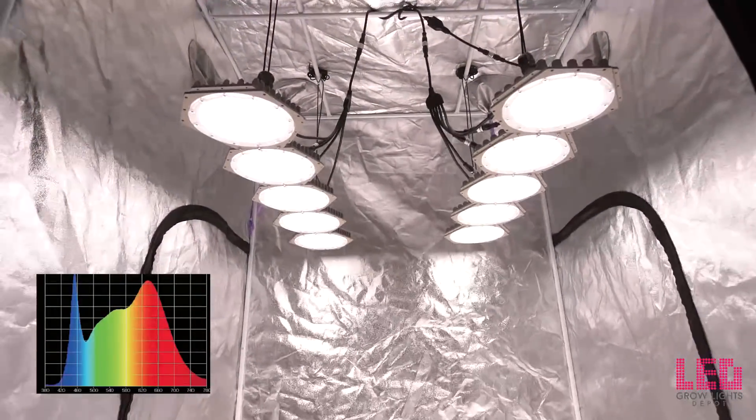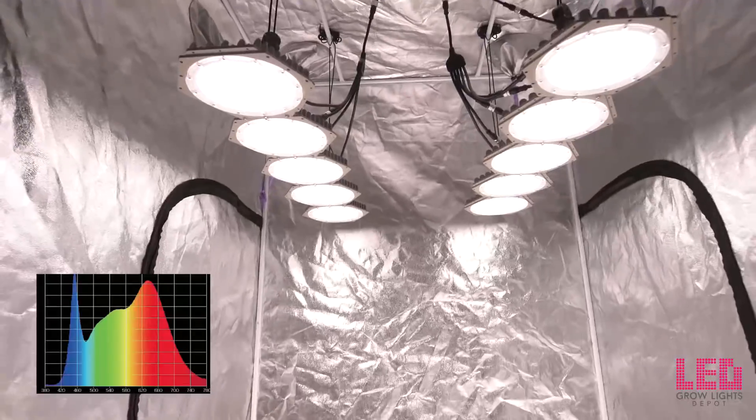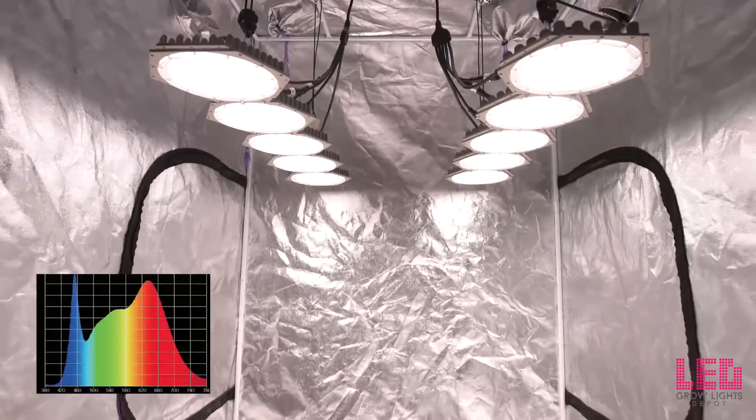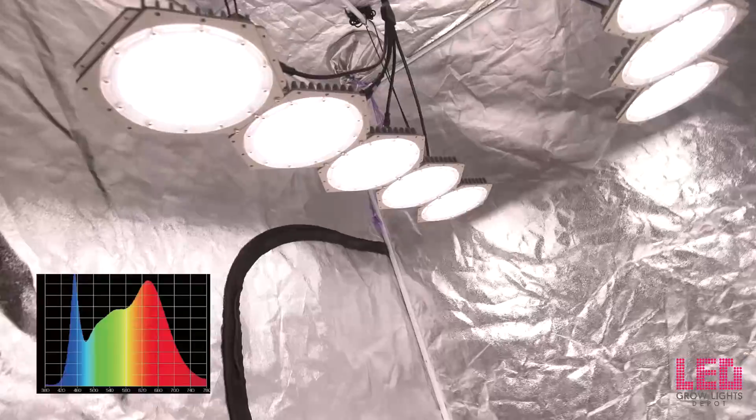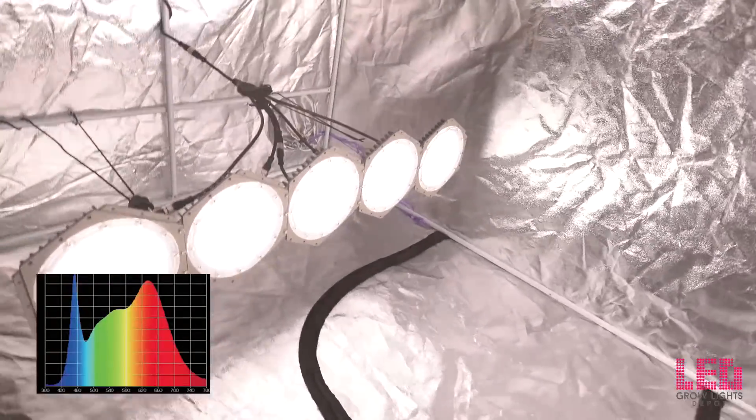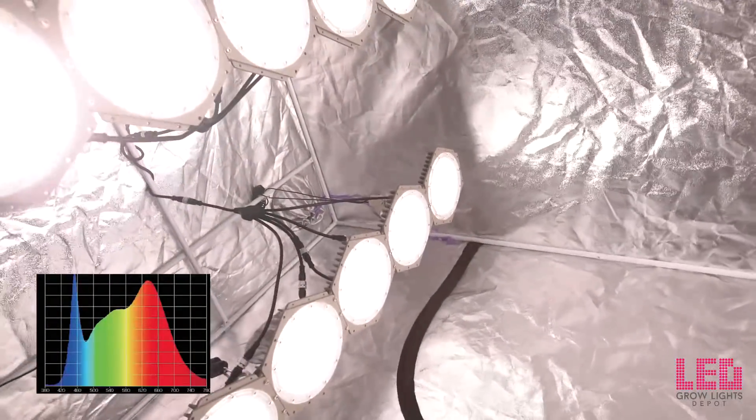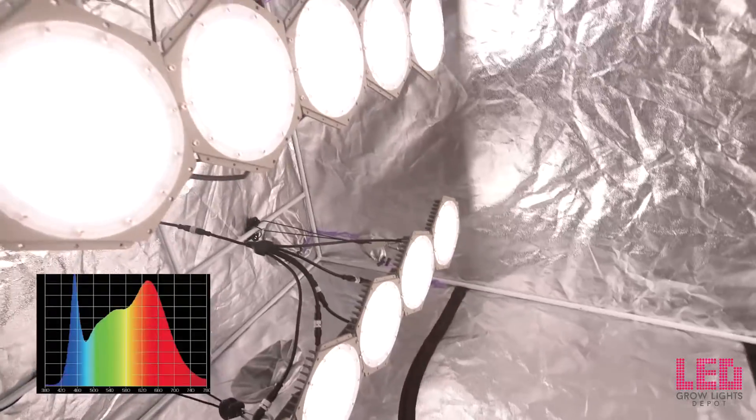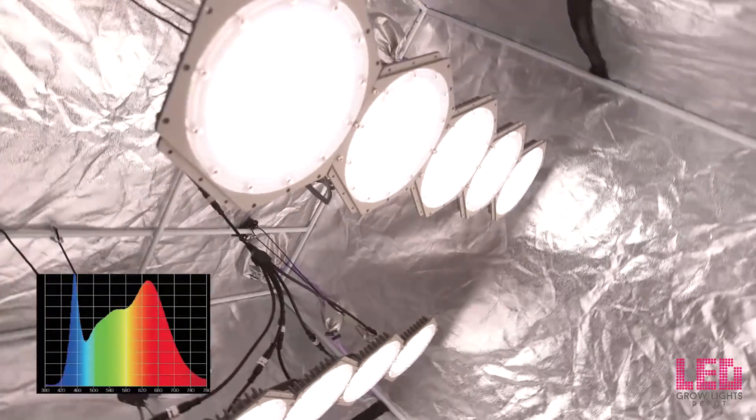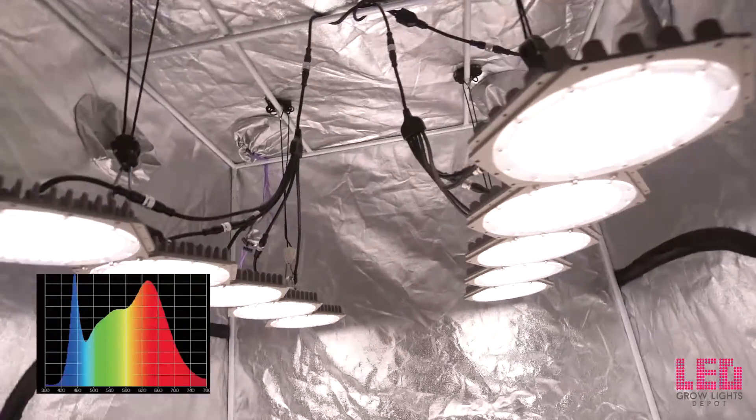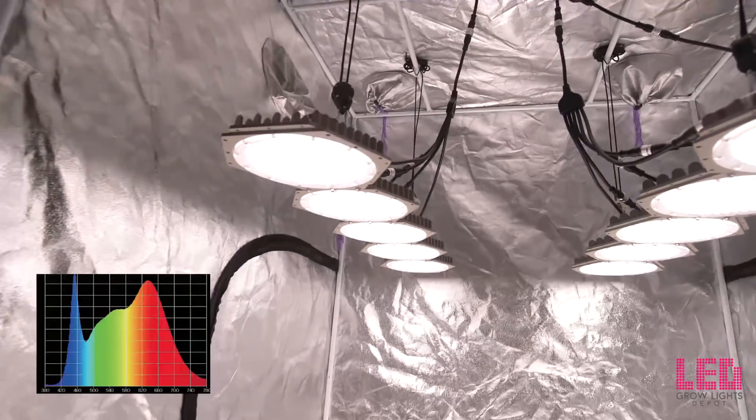The N-Light Sun Disc spectrum is full spectrum white and it's right around 4000 kelvin. The white light spectrum allows a working environment where you're able to see the plant's natural colors. The spectrum is heavy in blue, about 450 nanometers, but also has a large bump in red around 630 nanometers.